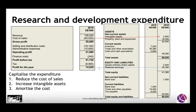When you have reduced your cost of sales, you will increase your profit for the year. With a higher profit for the year, the retained earnings will increase. The reduction in cost of sales means intangible assets will increase, so total equity and liabilities will still balance with total assets on the statement of financial position.